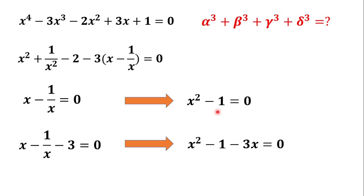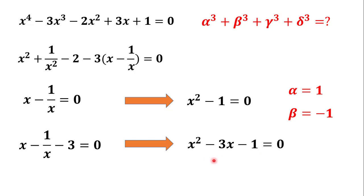The roots of the first equation are alpha equals 1 and beta equals minus 1. For the second equation, x squared minus 3x minus 1 equals 0, the sum of the roots of a quadratic equation equals minus the coefficient of x divided by the coefficient of x squared.